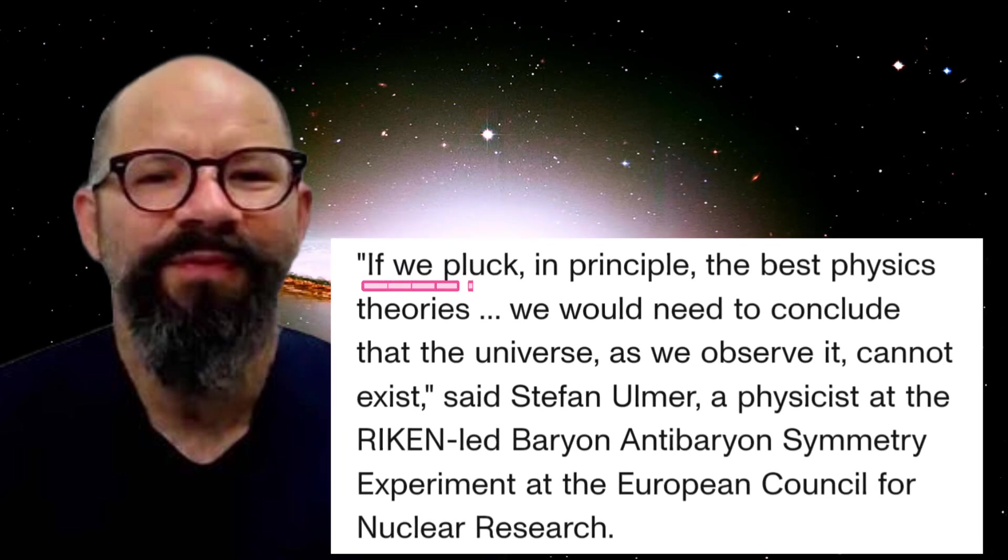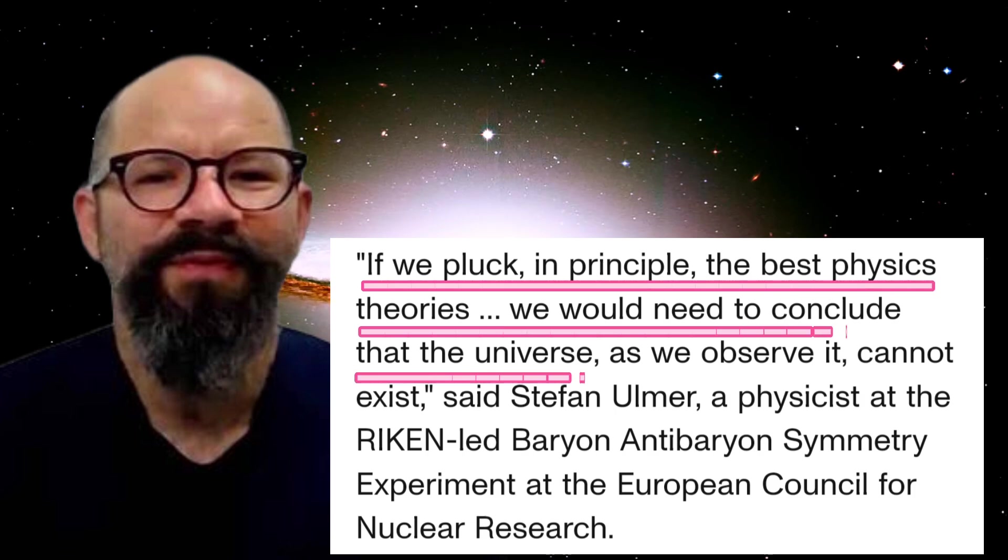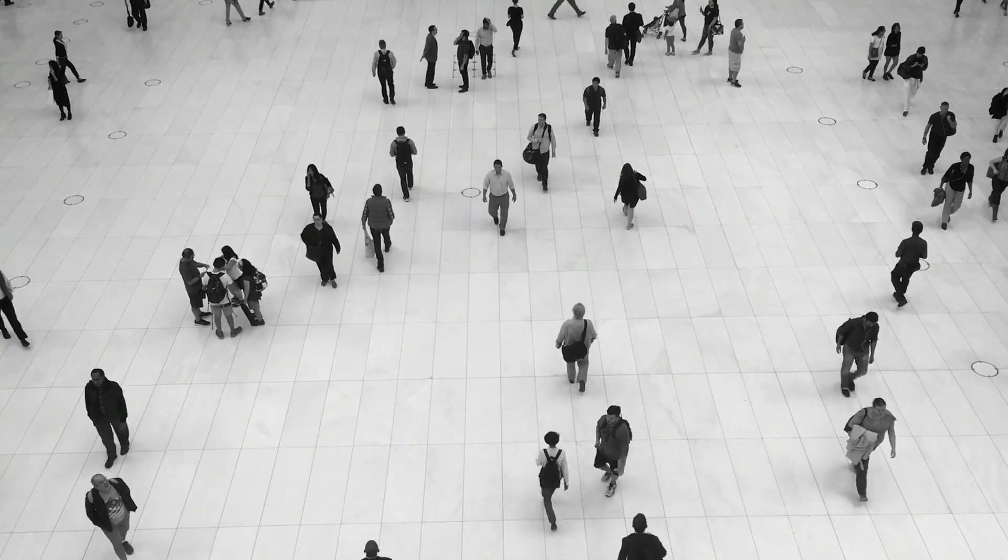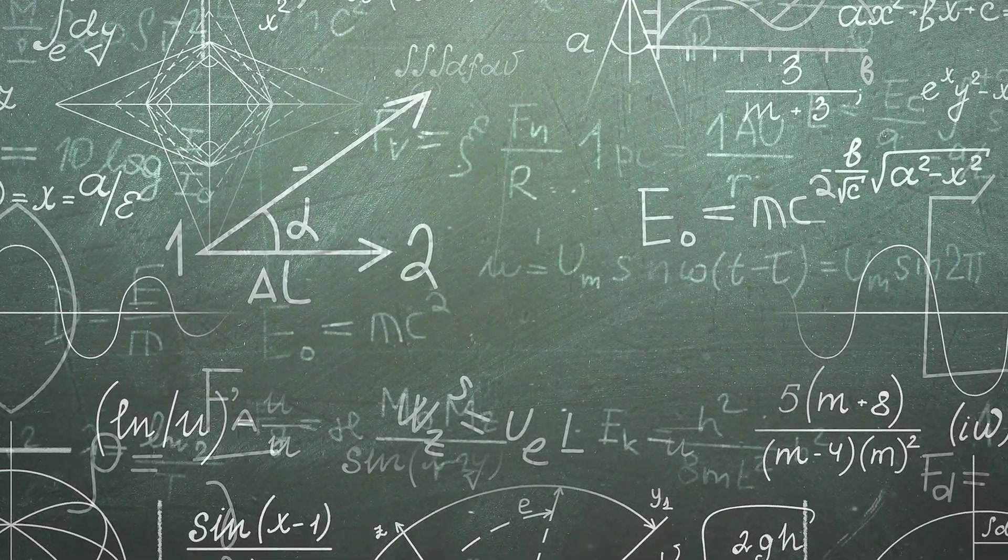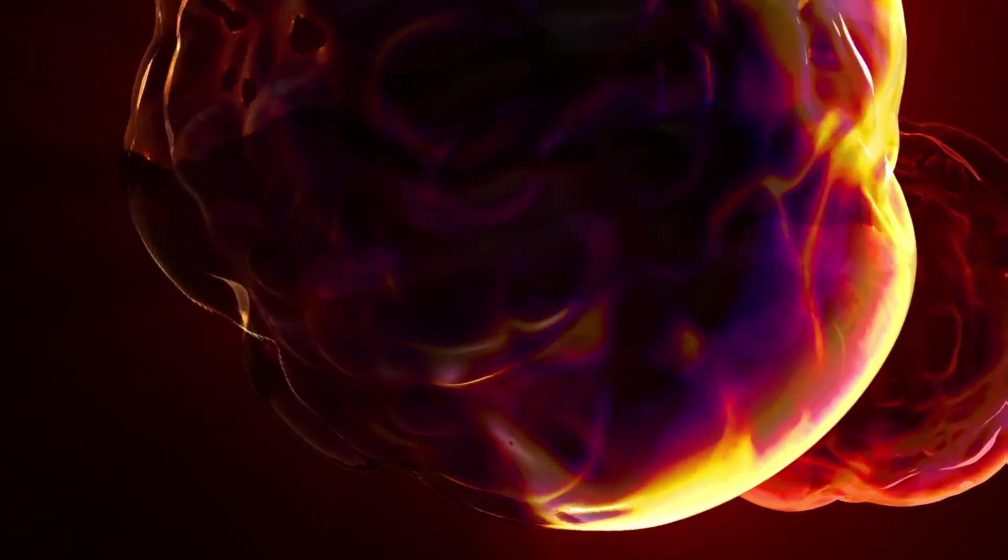Stefan Ulmer, a physicist at the European Council for Nuclear Research, said if we pluck, in principle, the best physics theories, we would need to conclude that the universe as we observe it cannot exist. But here we are on a habitable planet living our daily lives, so either our laws of physics are wrong or we're missing massive pieces of the metaphysical puzzle.